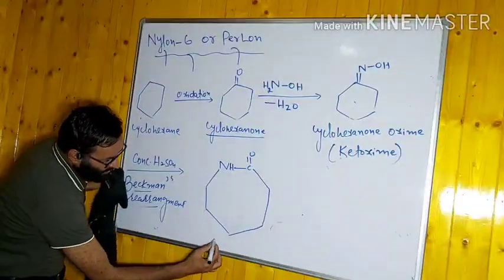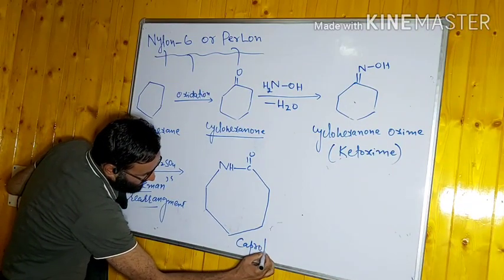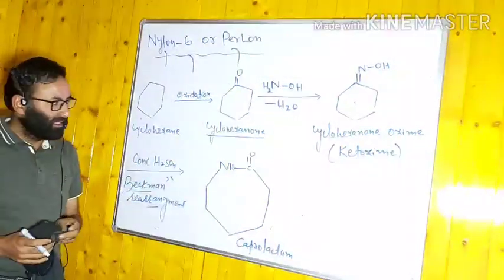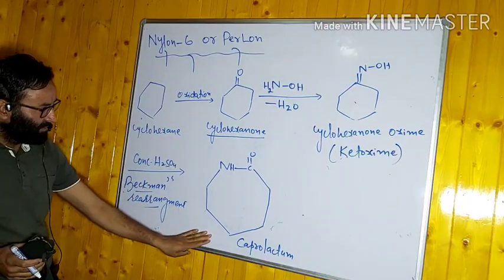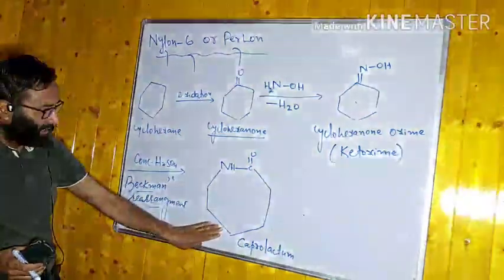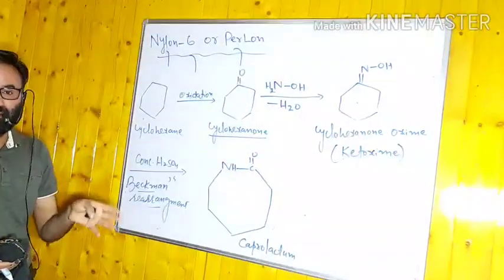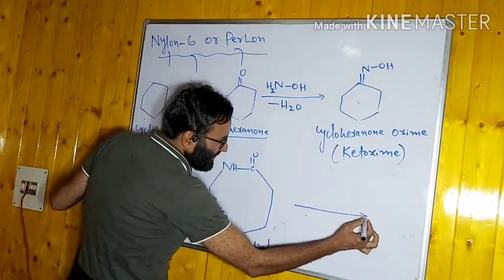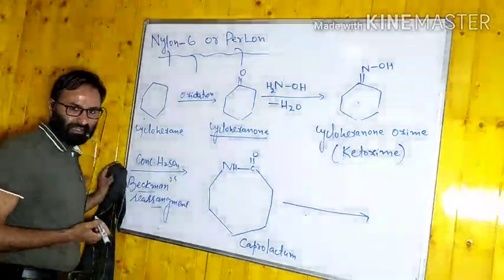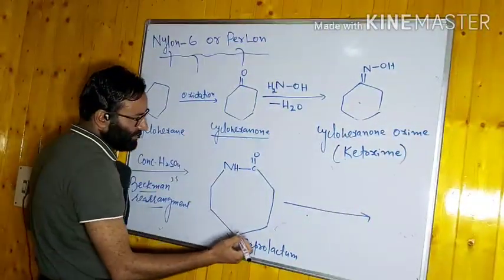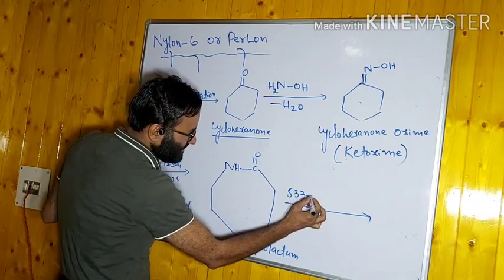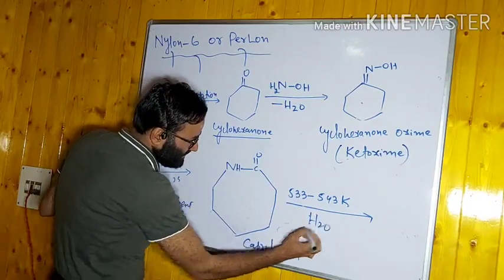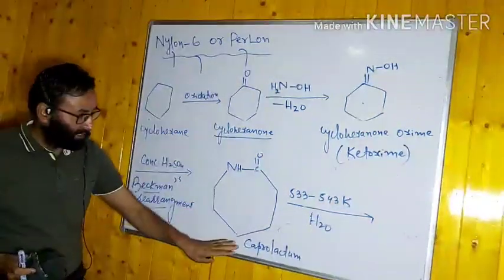The amide product formed by Beckmann's rearrangement is known as caprolactam, and it is the monomeric unit of nylon 6. To proceed with polymerization, caprolactam must first be heated — at a temperature of 533 to 543 K — in the presence of water, where it undergoes hydrolysis.